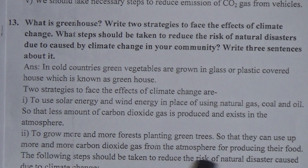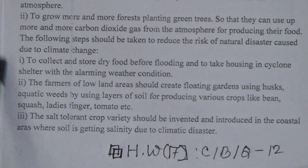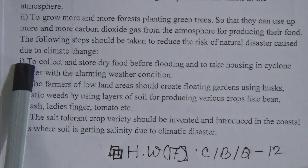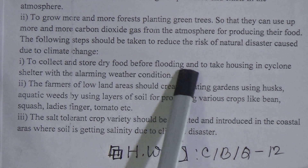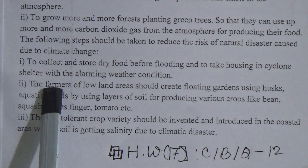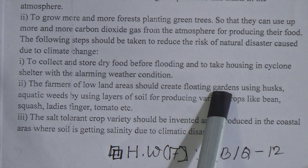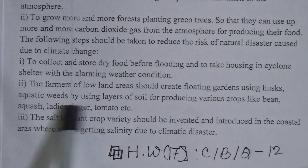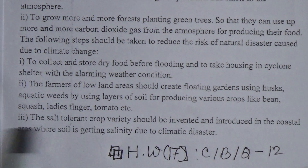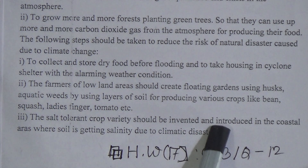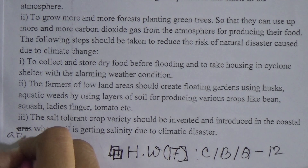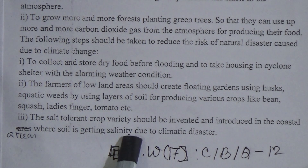The following steps should be taken to reduce the risk of natural disaster caused by climate change in your community: first, collect and store dry foods before flooding and take housing in a cyclone shelter during alarming weather conditions; second, farmers in low-land areas should create floating gardens using husk and aquatic weeds with layers of soil for producing crops like beans, squash, lady's finger and tomato; third, salt-tolerant crop varieties should be invented and introduced in coastal areas where soil is becoming saline due to climate change.